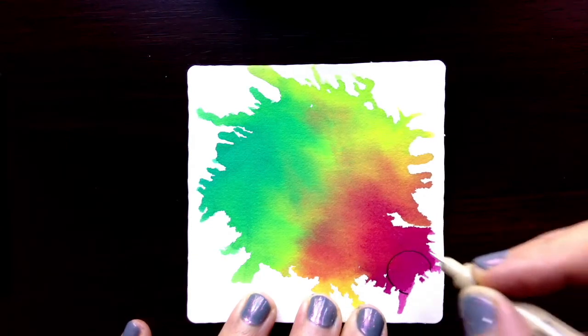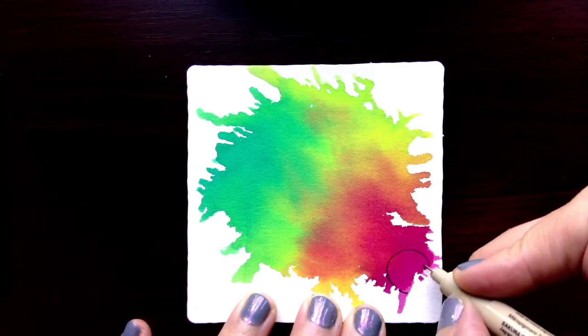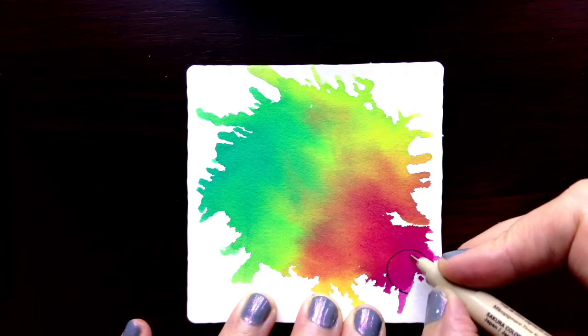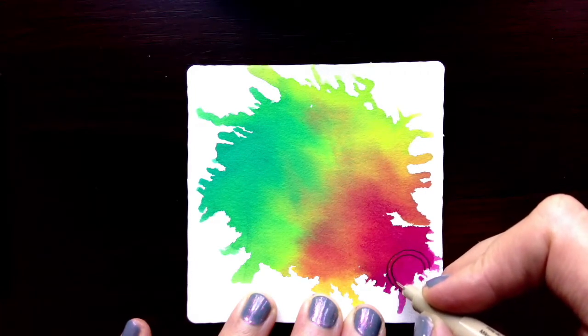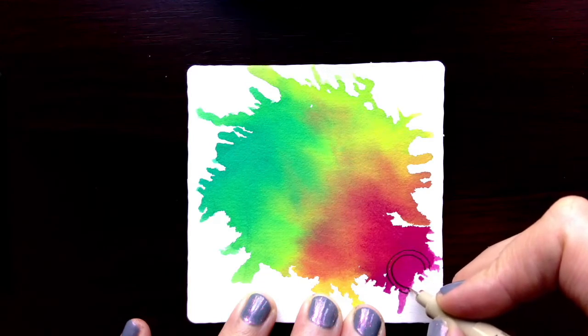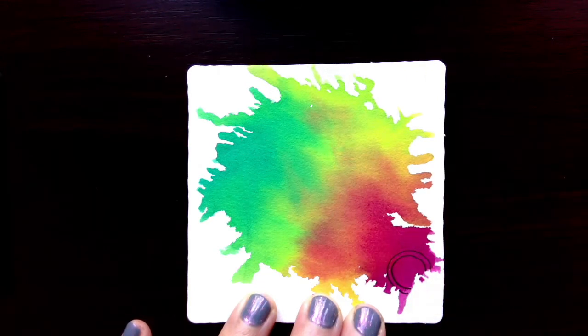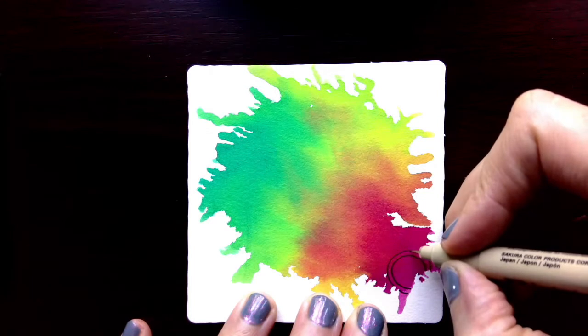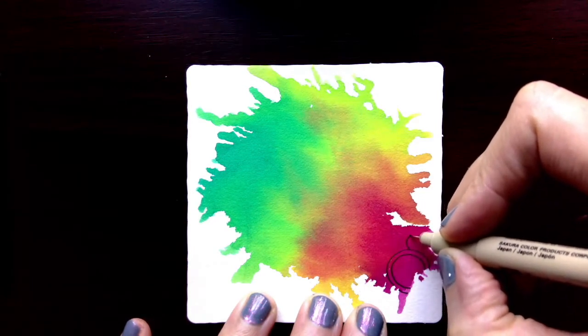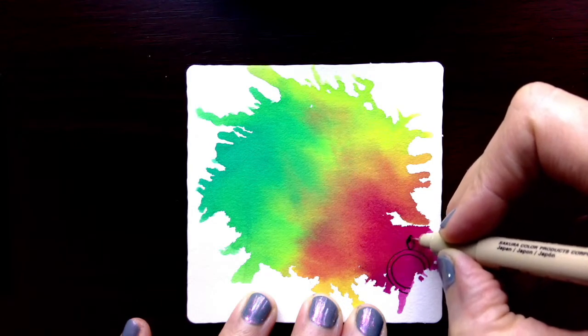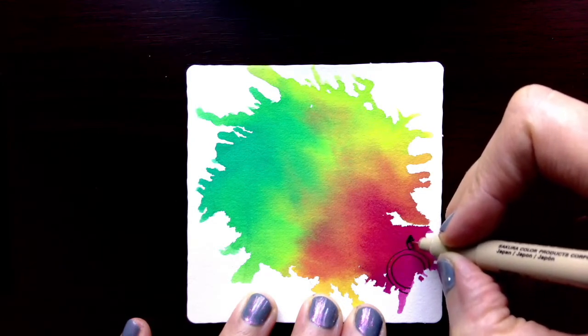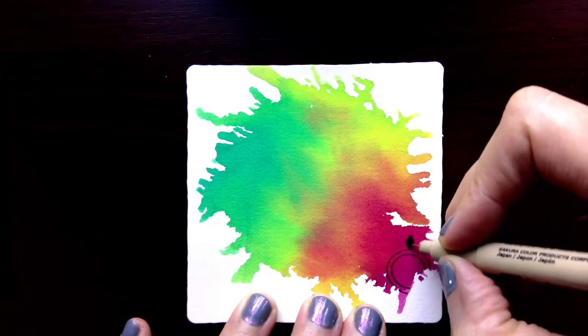I'm going to be drawing today the Zentangle pattern called Ratoon, and it starts by drawing an orb. I'm going to put mine right down here in the bottom corner, kind of trailing off the edge of the watercolor, and I'm going to put these seed shapes all around the orb, inking each one of them in.